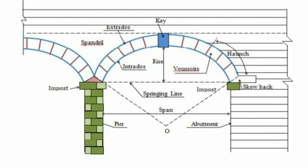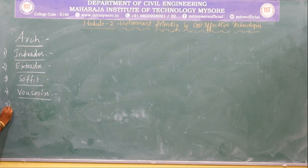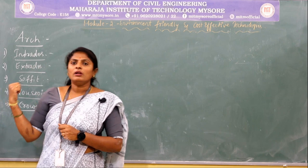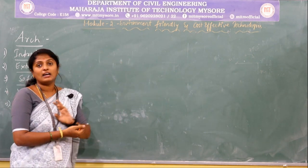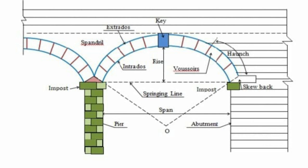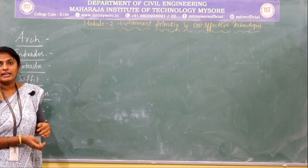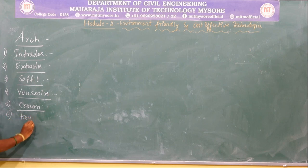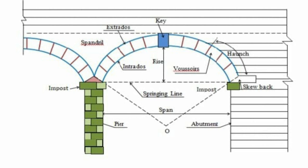Voussoirs are the wedge-shaped units which are used to form an arch. These individual wedge-shaped units glued together with mortar form an arch, and each individual unit is a voussoir. The next element is the crown — it is the highest part of the extrados, the outer curve of an arch. The key is the wedge-shaped voussoir provided at the crown.